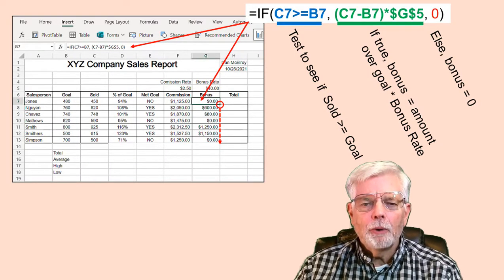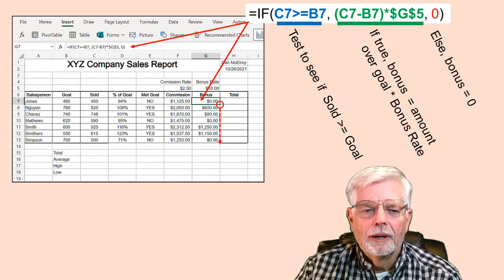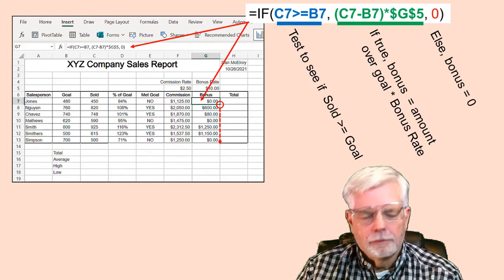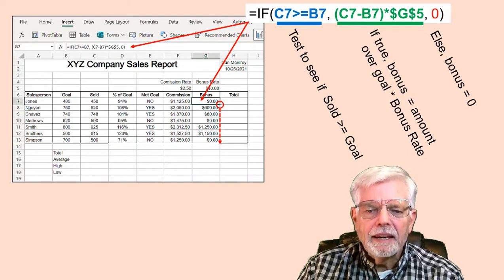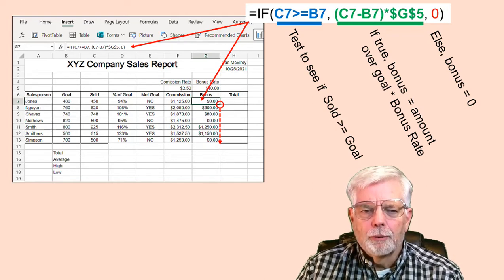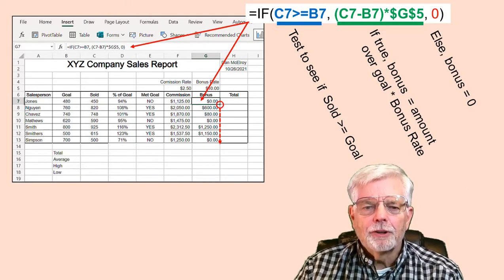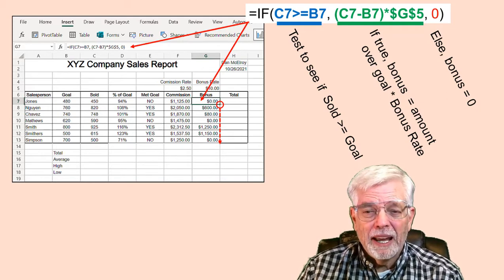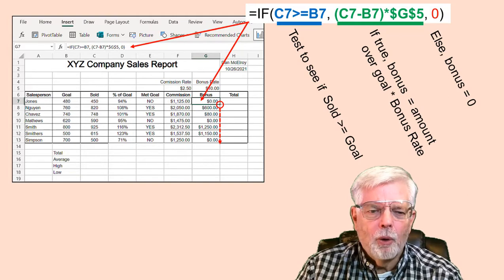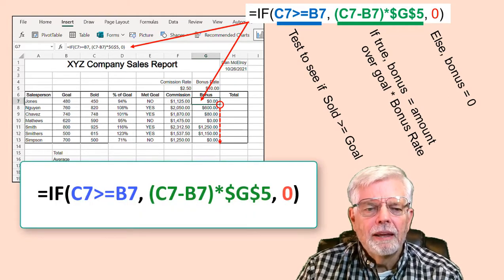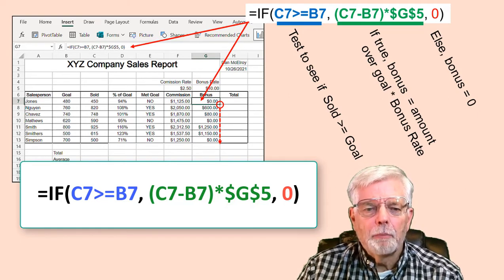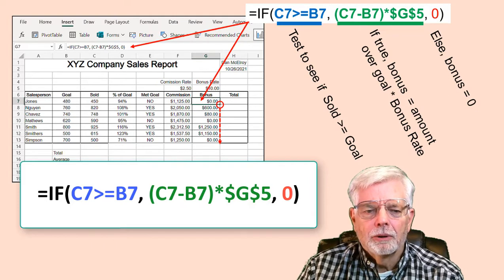Employees get a $10 bonus for each item sold over their goal; if they don't make their goal, no bonus. Select cell G7 for Jones' bonus. The IF formula is: =IF(C7>=B7,(C7-B7)*$G$5,0). The test checks if items sold are greater than or equal to the goal. If true, compute the number of items over the goal (C7-B7) — in parentheses because subtraction has lower priority than multiplication — then multiply by the bonus rate in $G$5. If false, the bonus is zero.